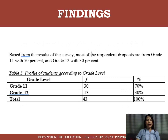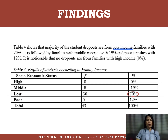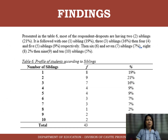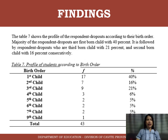Based on the results of the survey, most of the respondent dropouts are from Grade 11, with 70%. Table 4 shows that the majority of student dropouts are from low-income families, with 70%. The majority of respondent dropouts are living in the sub-urban area, with 93%. Most of the respondent dropouts have 2 siblings, or 21%. Table 7 shows the majority of respondent dropouts are firstborn children, with 40%.